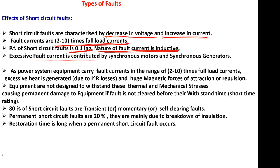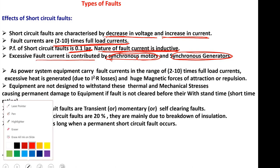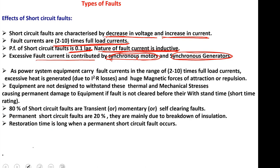The fault current is mainly contributed by synchronous motors and synchronous generators — both are sources for fault current. As power system equipment carries fault currents of 2 to 10 times full load currents, excessive heat is generated due to I²R losses, and huge magnetic forces of attraction or repulsion occur.